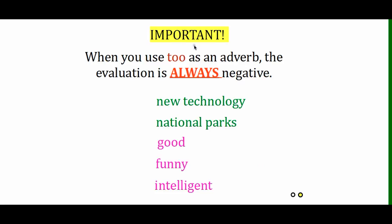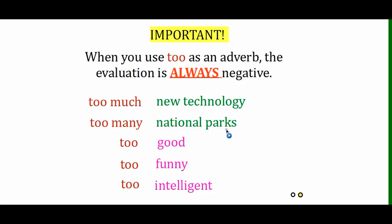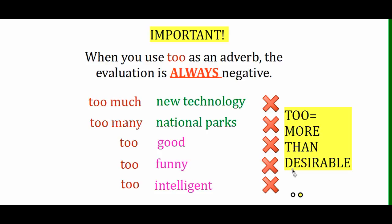It's really important to mention that when you use 'too' as an adverb the evaluation is always negative. For example: 'There is too much new technology.' 'There are too many national parks.' 'Something is too good.' 'Something is too funny.' 'Someone is too intelligent.' Every time, this is negative. 'Too' means more than desirable. So remember, 'too' as an adverb — it's always negative.